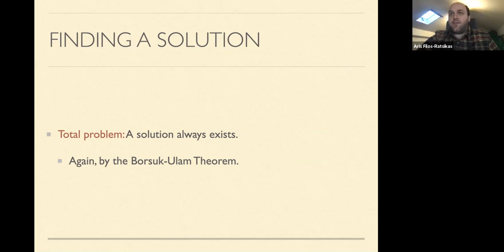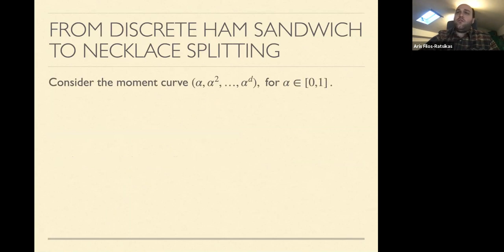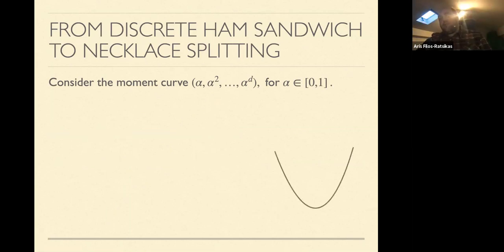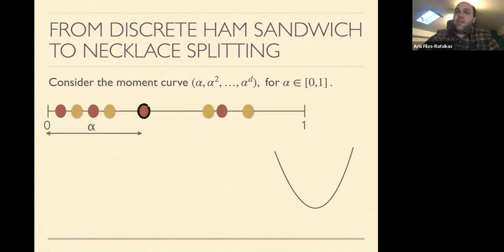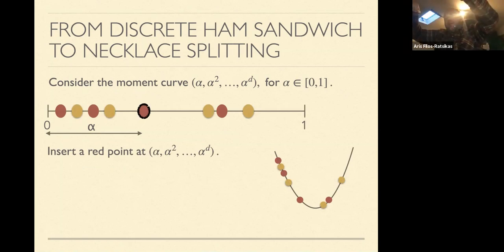That all three problems can be proven using the Borsuk-Ulam theorem is not a coincidence. To get from discrete ham sandwich to necklace splitting, one considers the moment curve — the curve (α, α², …, α^d) for α between zero and one. For each bead on the necklace, we look at its distance from the left endpoint of the necklace, find the corresponding point on the moment curve, and place a point of that color there. In two dimensions, this is like tilting the necklace and placing all beads on the moment curve.